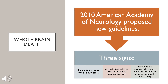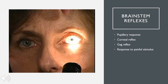First, the patient must be in a coma with a clear known cause. They must also no longer exhibit any brainstem reflexes. And finally, independent breathing without a ventilator must have permanently stopped. There are many different tests that can be done to test these brainstem reflexes, but there is a standard for neurologic reflex tests that include the pupillary response, pictured here, where light is shown into the eye and pupillary constriction is looked for.